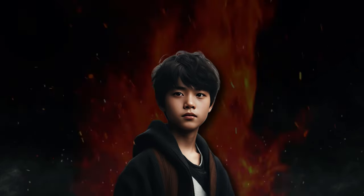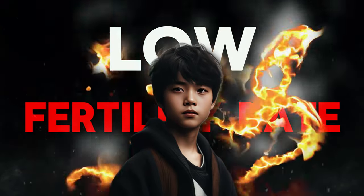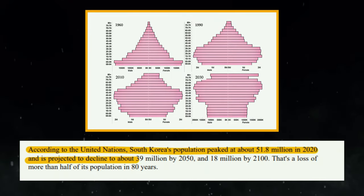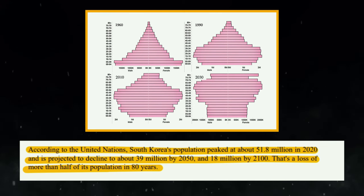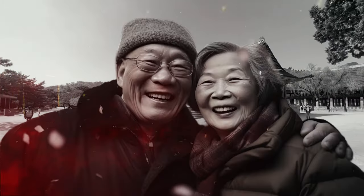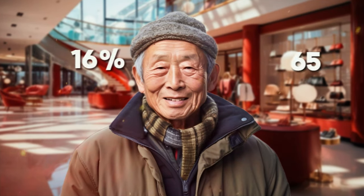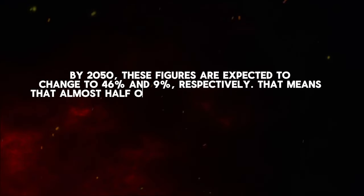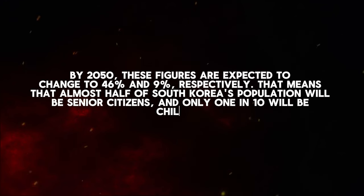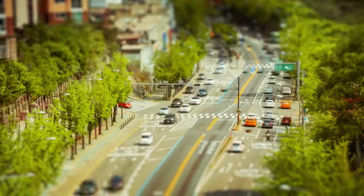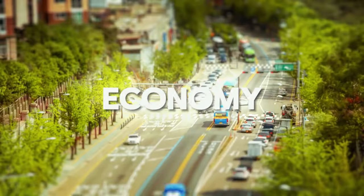One of the most obvious and immediate consequences of South Korea's low fertility rate is the shrinking and aging of its population. According to the United Nations, South Korea's population peaked at about 51.8 million in 2020 and is projected to decline to about 39 million by 2050 and 18 million by 2100 — a loss of more than half of its population in 80 years. At the same time, the proportion of elderly people is increasing while that of young people decreases. In 2020, about 16 percent of South Korea's population was 65 or older, and 12 percent was 14 or younger. By 2050, these figures are expected to change to 46 percent and 9 percent, respectively — meaning almost half the population will be senior citizens and only 1 in 10 will be children. This demographic shift has profound implications for South Korea's economy, society, and security.